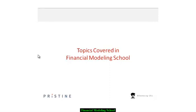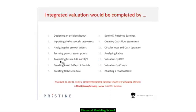Let's take a brief look at what topics are covered in the Financial Modeling School and understand why they flow in this particular fashion. To create the integrated valuation model, we start by designing an efficient layout, then build the historical statements, then growth drivers based on those statements, then assumptions for the model, then the P&L and balance sheet, and then the asset and depreciation schedule that cuts across the P&L and balance sheet.